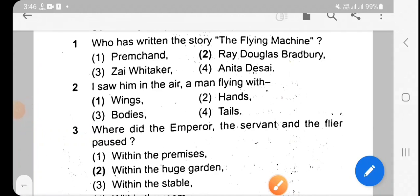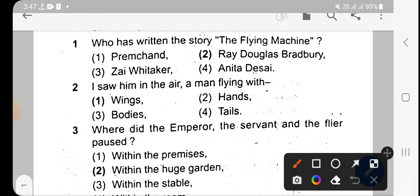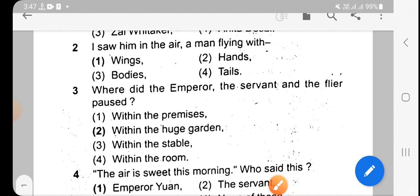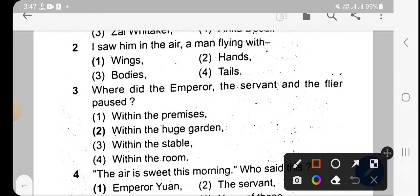Who has written the story 'The Flying Machine'? The answer is Douglas Bradbury. Next question: 'I saw him in the air, a man flying with...' The options are wings, hands, bodies, and tails. The answer is option 1, wings.